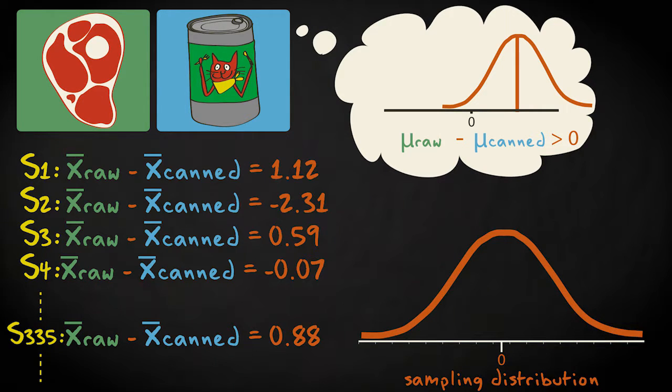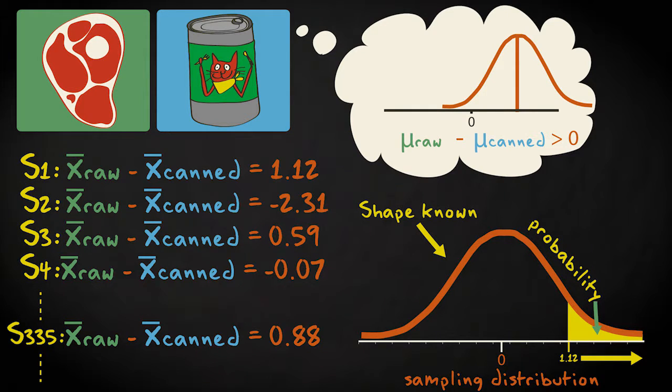This is useful because if we know what the distribution looks like, we can say what the probability of a certain range of sample statistic values is by looking at the area under the curve. So if we know the distribution, we can determine probabilities and make a more informed decision.